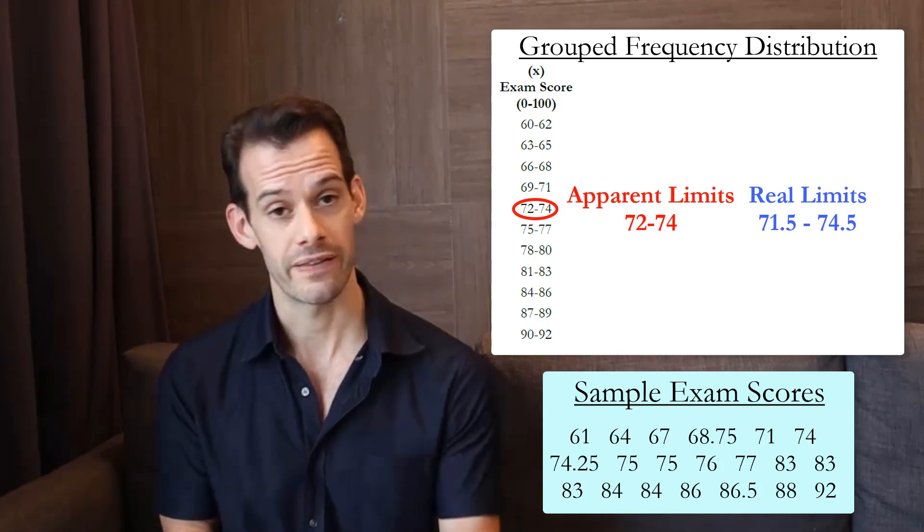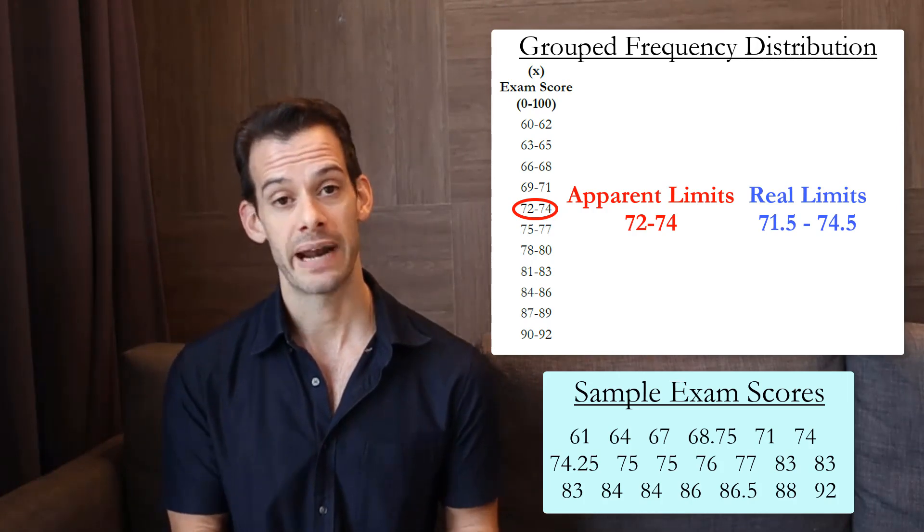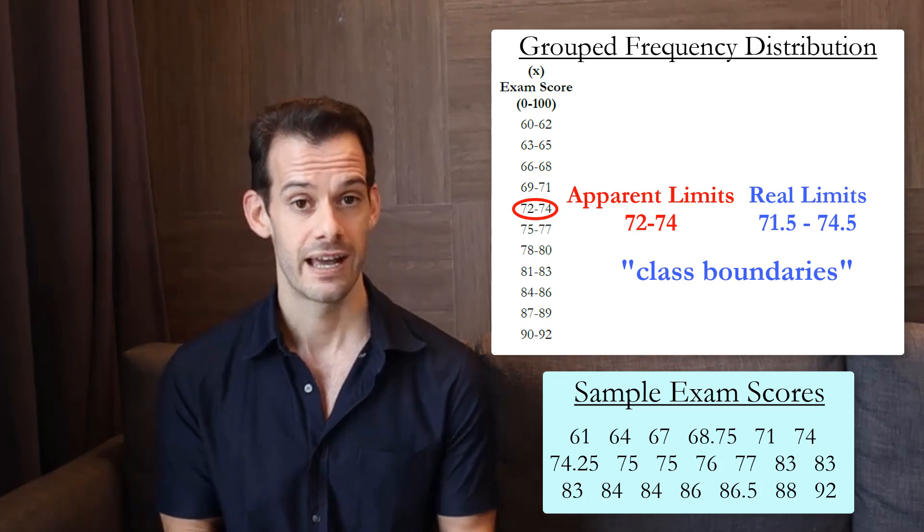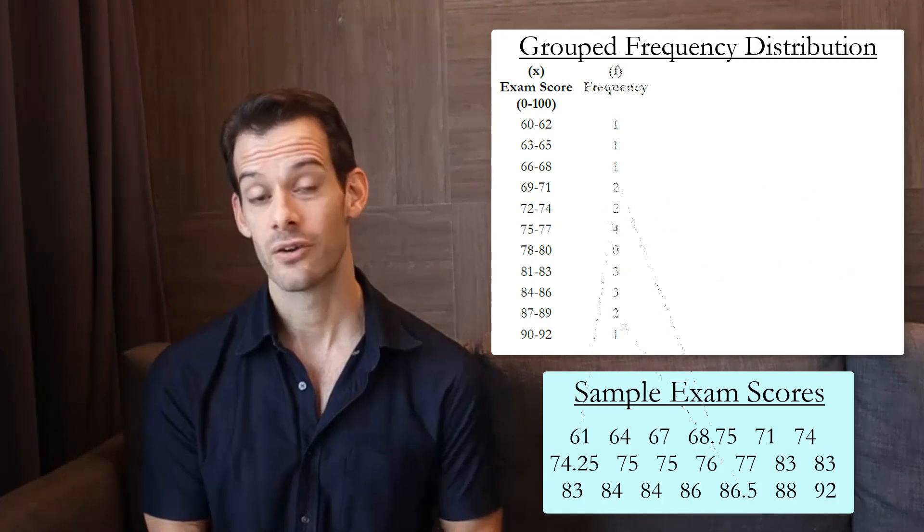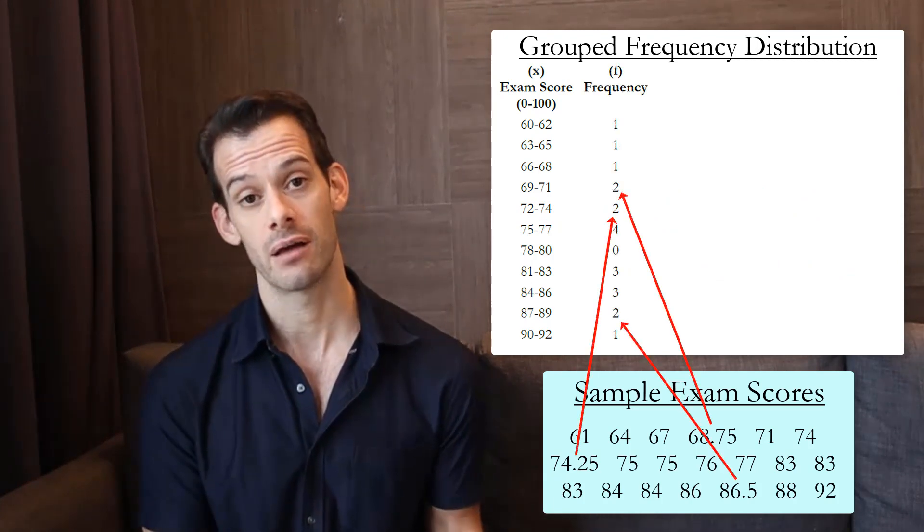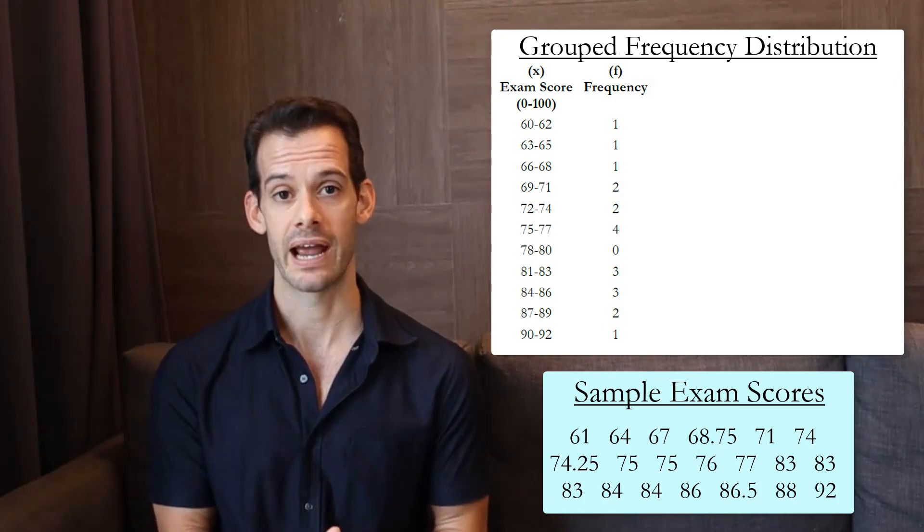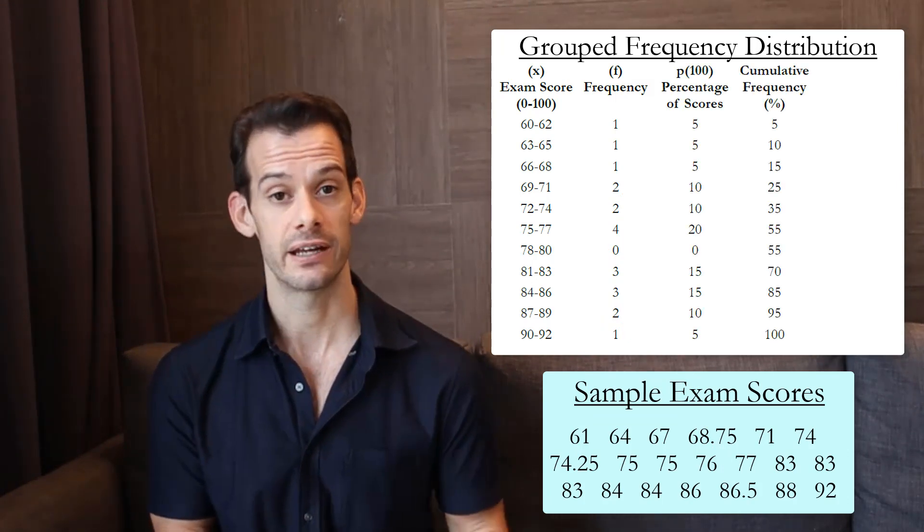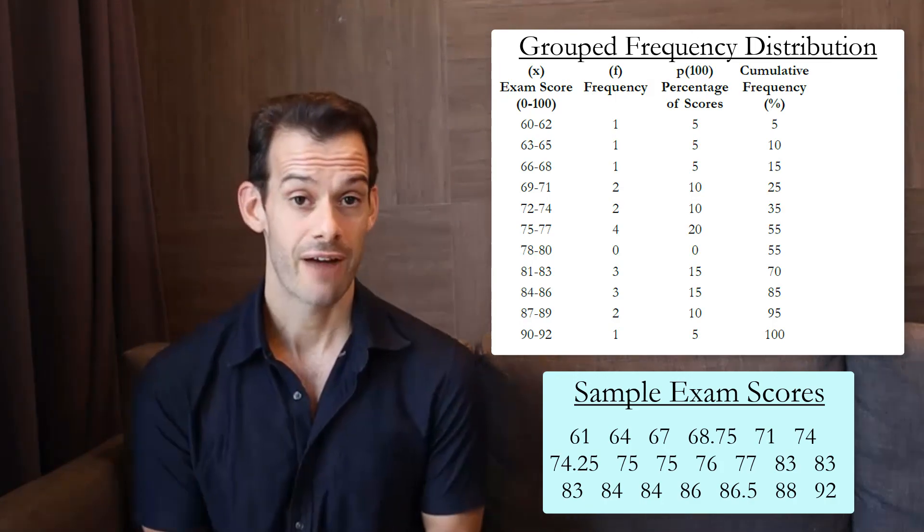And so when we look at this interval, it has apparent limits of 72 to 74, but it has real limits of 71.5 to 74.5. These can also be called class boundaries. With this in mind, we can now fill in the frequency column for our sample set of data. And then we can go ahead and create a percentage column. And we'll also create one for the cumulative frequency as a percentage. So now we have our completed table.